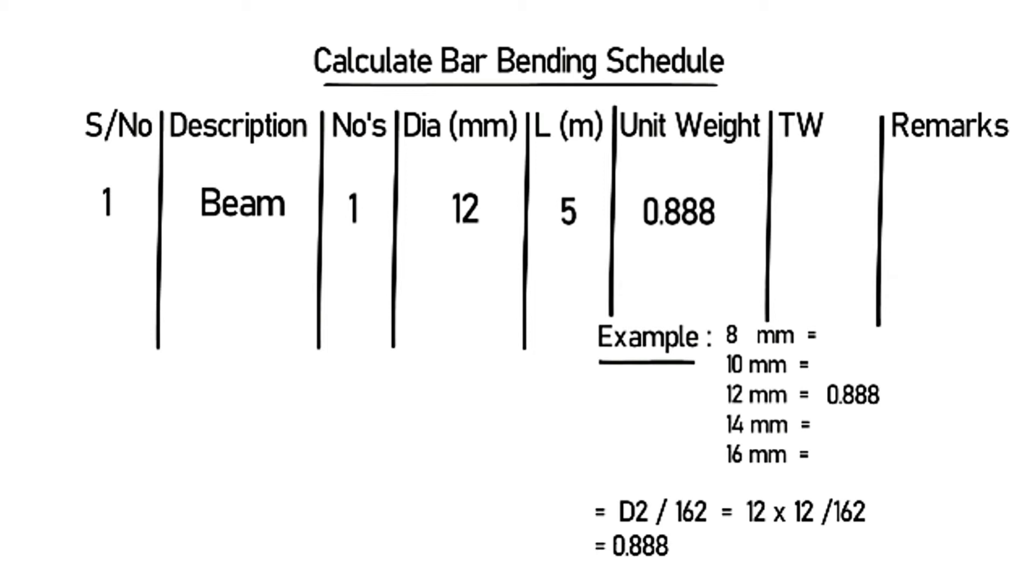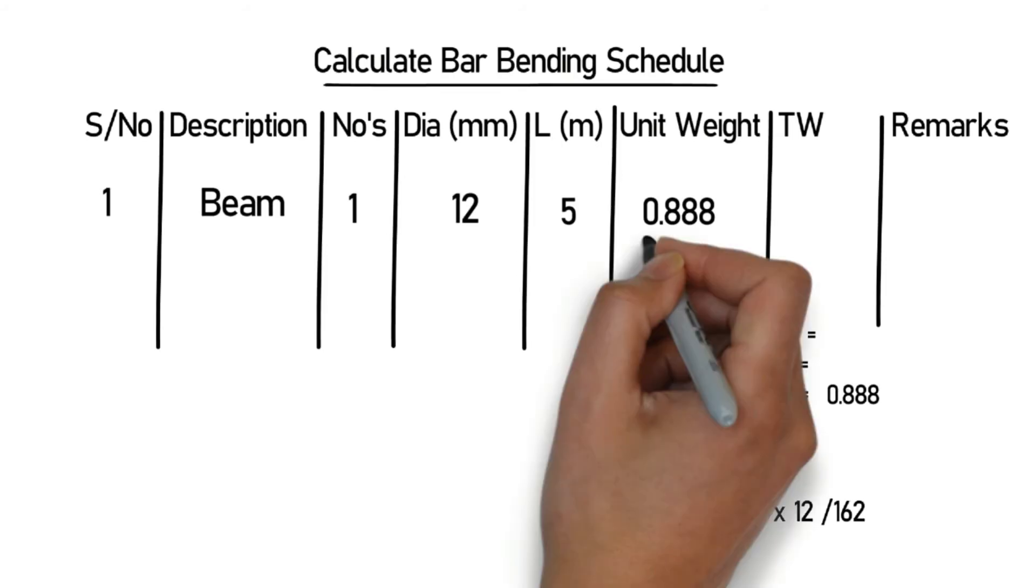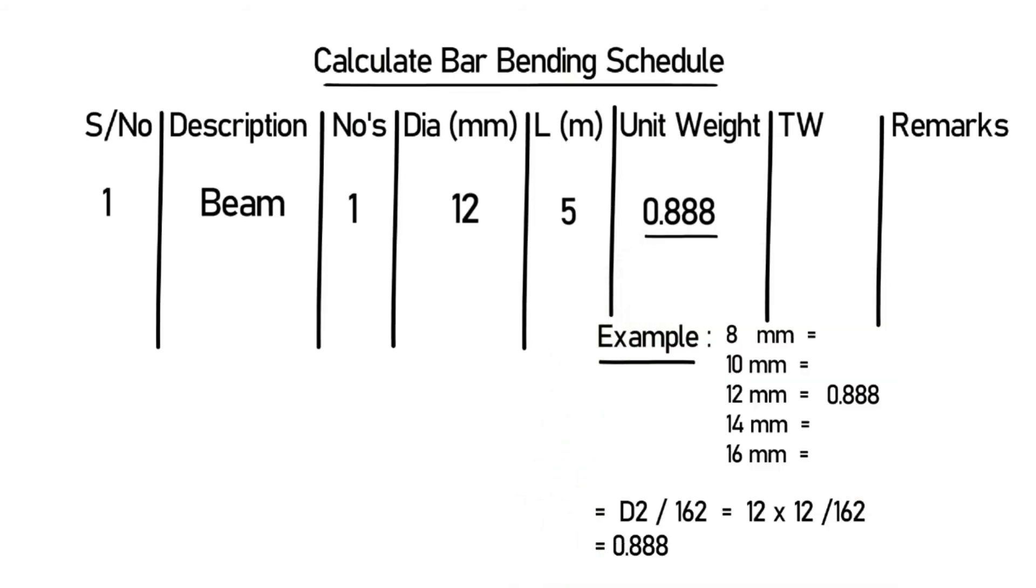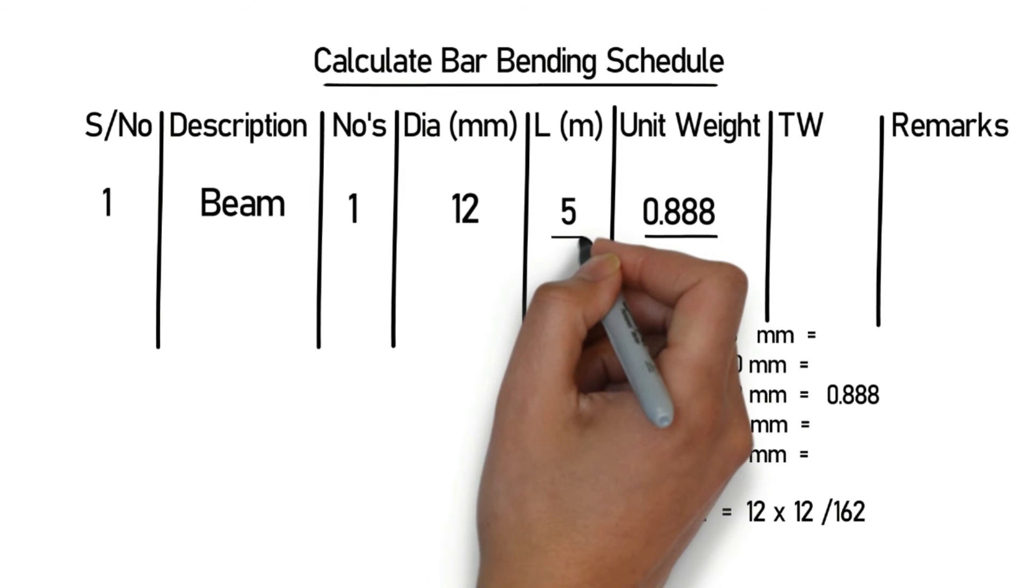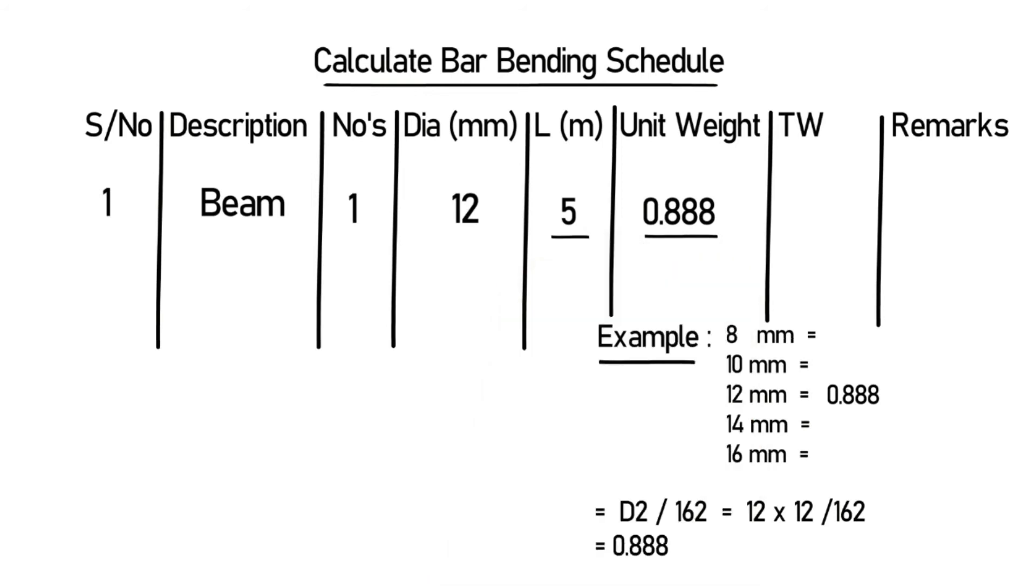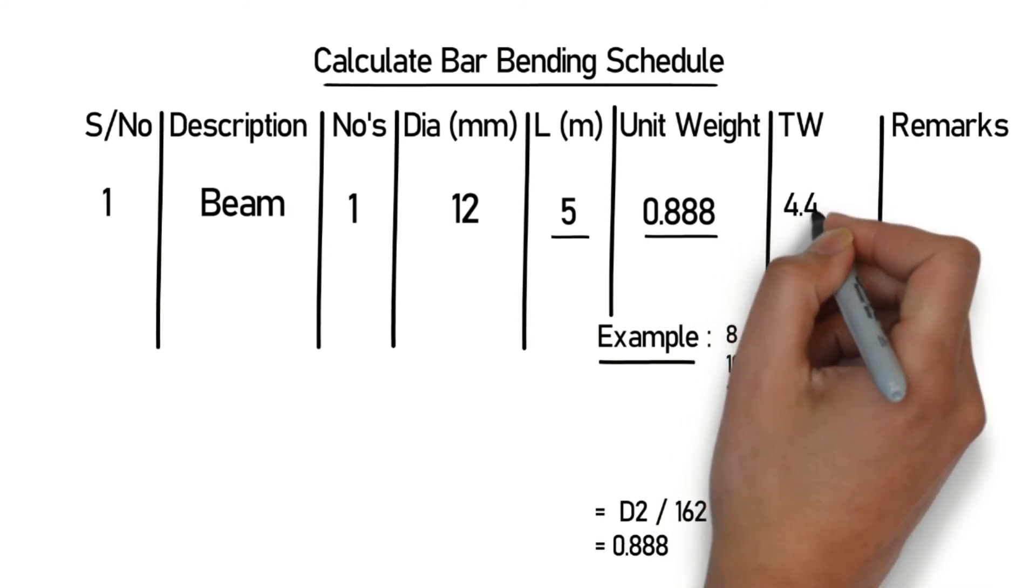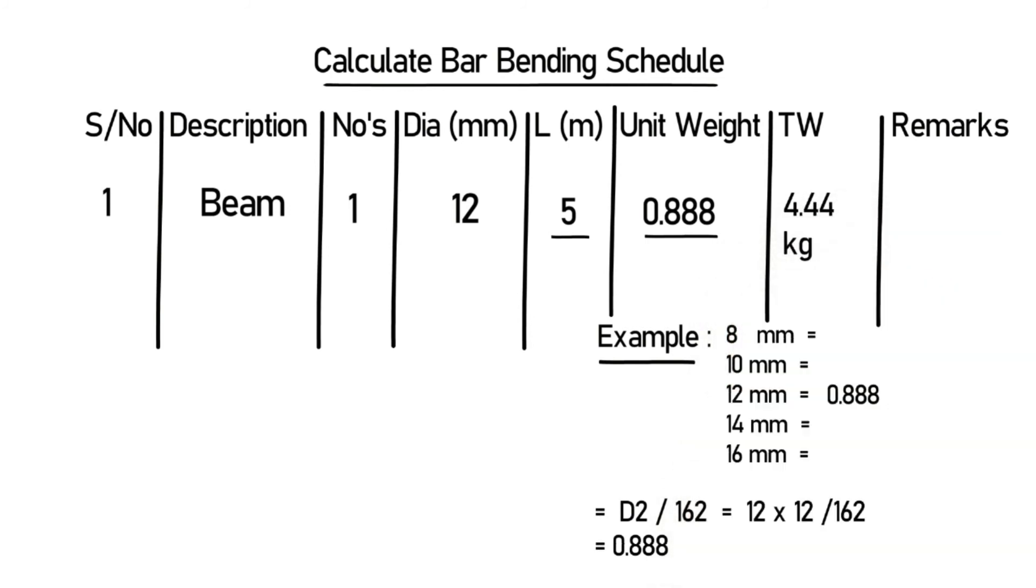To find out the total weight, we need to multiply the unit weight with the length. Multiply 0.888 multiplied by 5, which will give you 4.44 kg. This is the total weight.